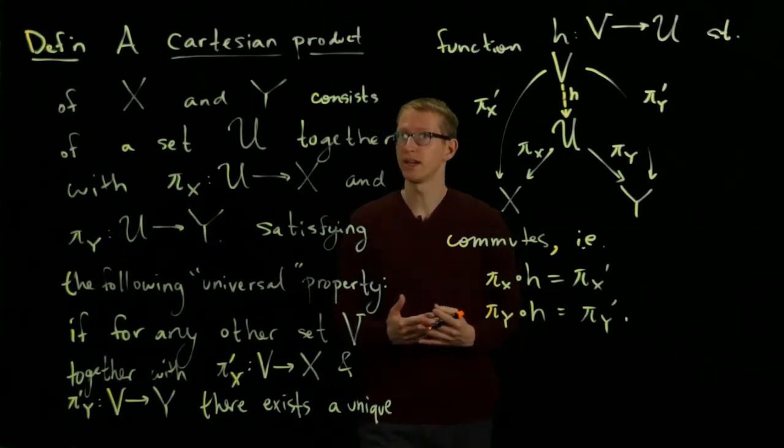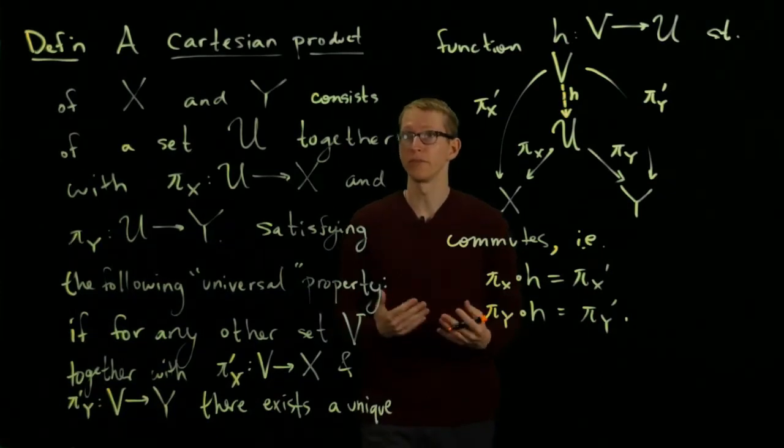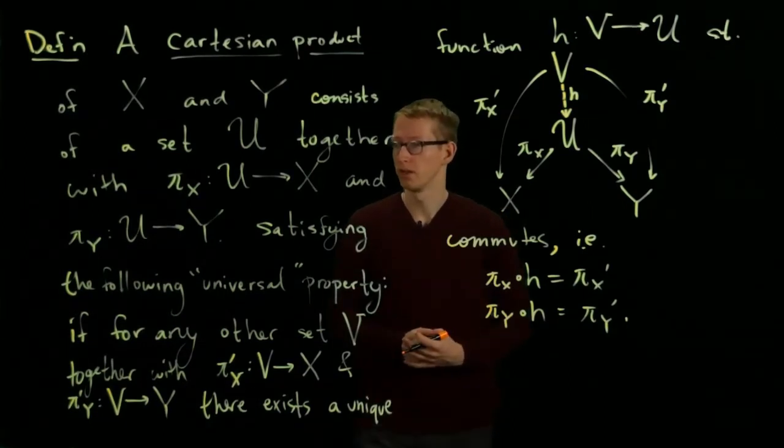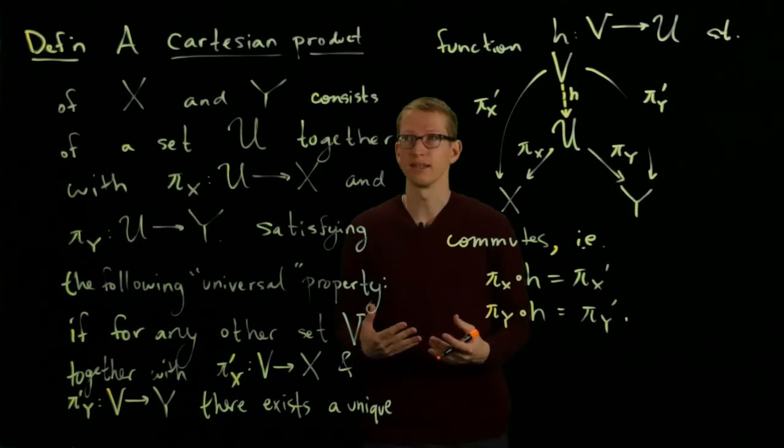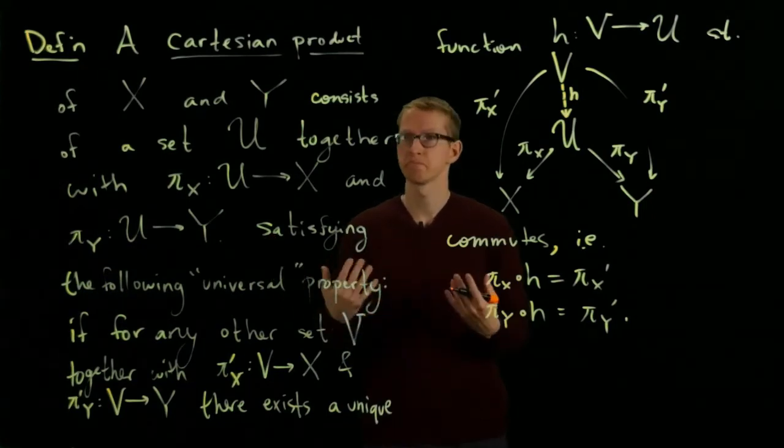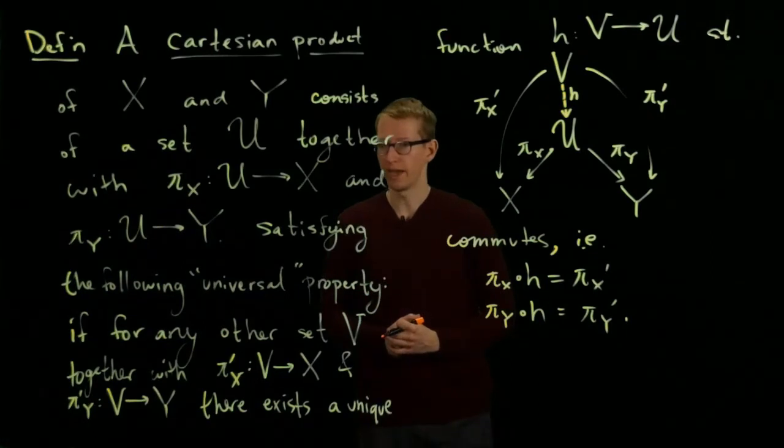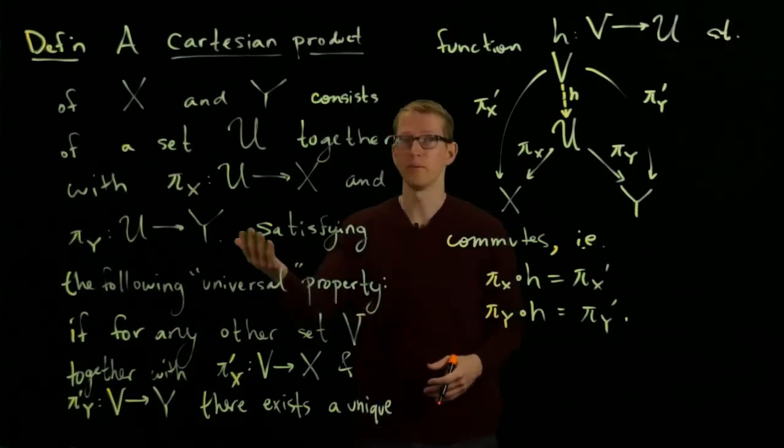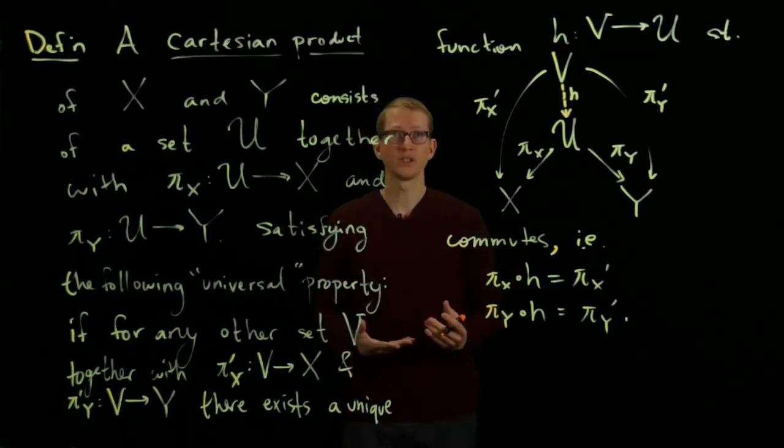The reason this definition is presented this way is the following. First, it avoids any particular specific aspects to sets. I could replace these sets with anything really—vector spaces or whatever—and this definition still makes sense as long as I know what a map between vector spaces is.